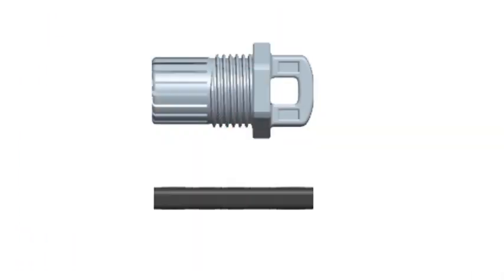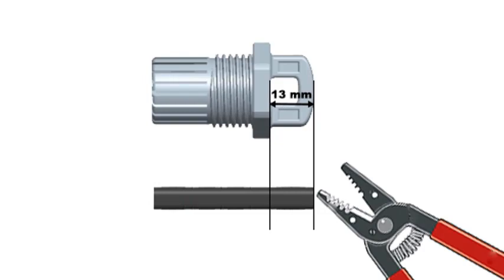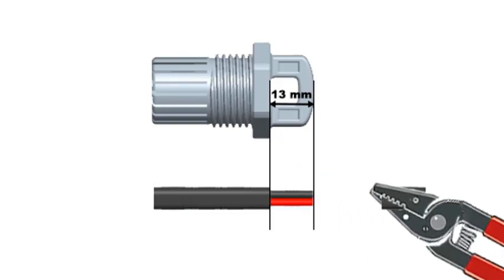Now, let's assemble. Using the Terminator loop to measure, remove 13 mm or ½ inch of the cable sheath from the conductors.